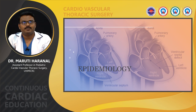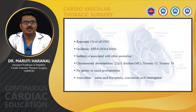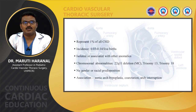DORV represents around 1% of all congenital heart diseases, with an incidence of 0.03 to 1.14 per live birth. It can occur in isolation or may be associated with other anomalies. Chromosomal abnormalities such as 22q11 deletion, trisomy 13, and trisomy 18 are associated with DORV. There is no gender or racial predisposition. Association of aortic arch anomalies, coarctation, and arch interruptions are seen in DORV, especially with the Taussig-Bing variant.